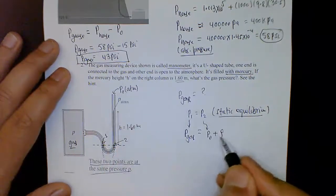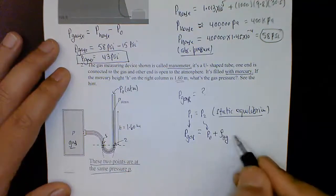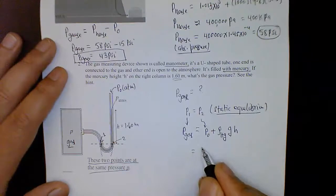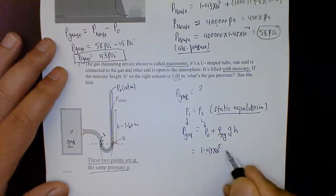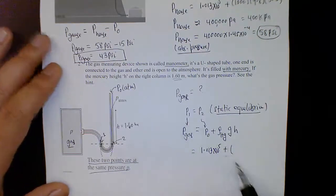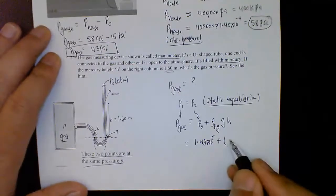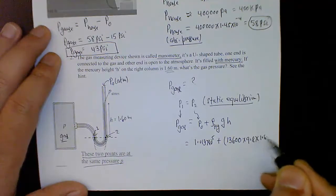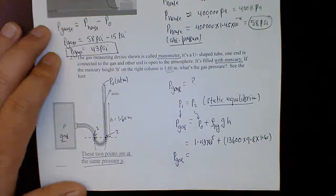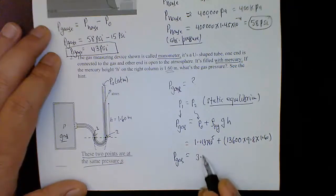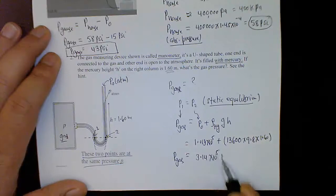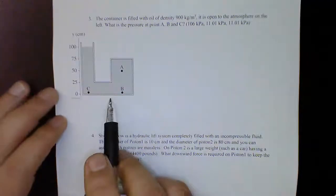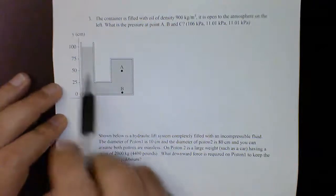Pressure p2 equals p0 (atmospheric, open to atmosphere) plus density of mercury times gravity times height. P0 is 1.013 × 10⁵ Pascals. Density of mercury is 13,600 kg/m³, gravity is 9.8, and height is 1.6 meters. Calculating this gives approximately 1.304 × 10⁵ Pascals. That is the gas pressure in the container.